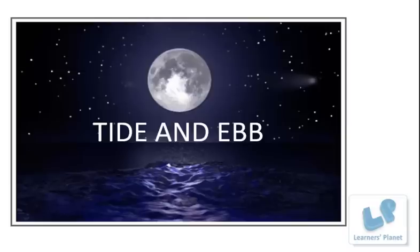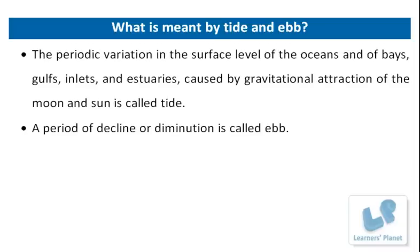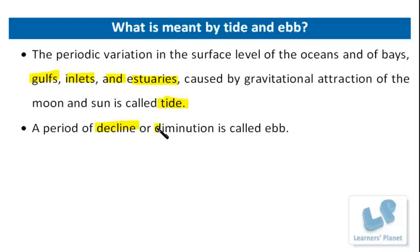So this is basically called tide and ebb. Now let us see the specific definition. Tide and ebb refers to the periodic variation in the surface level of the oceans, bays, gulfs, inlets, and estuaries, caused by the gravitational attraction of the Moon and the Sun. This periodic variation is called tide, whereas a period of decline or diminution is called ebb.